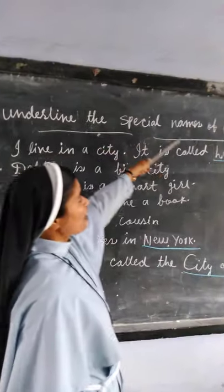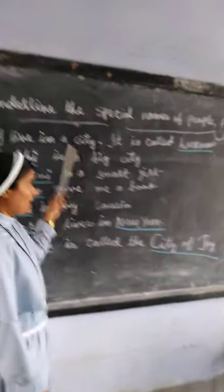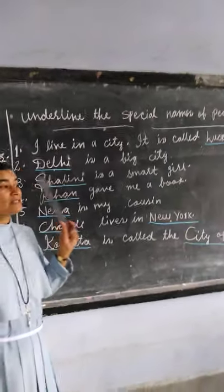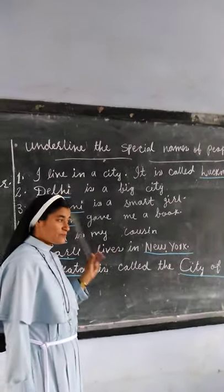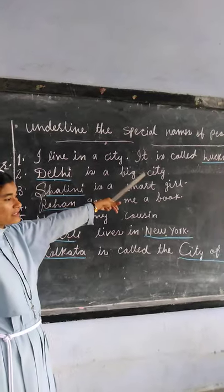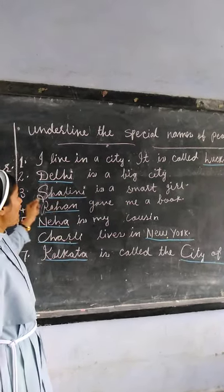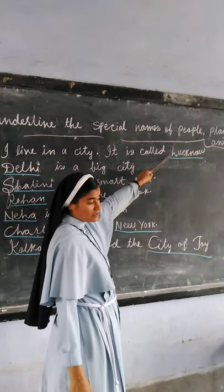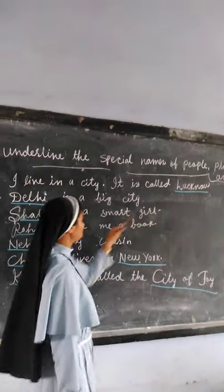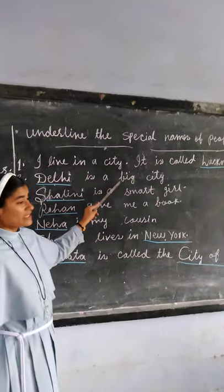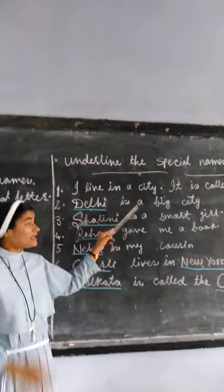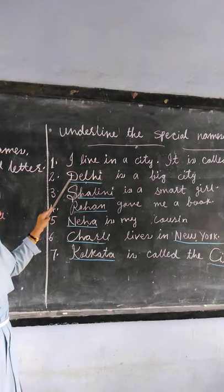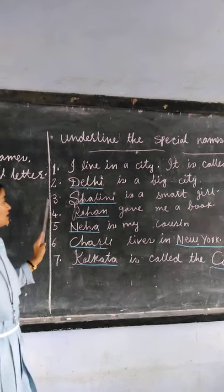Now, underline the special names of people, places, or animals. We can identify a special name by looking for the capital letter. Number 1: I need this order right now — here the capital letter tells us it's a special name. Number 2: Delhi is a big city. Delhi starts with a capital letter, so it is a special place name.